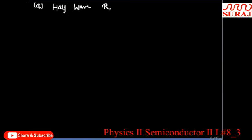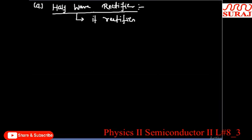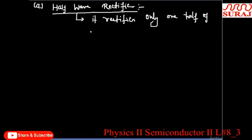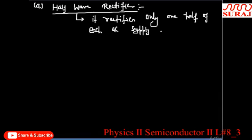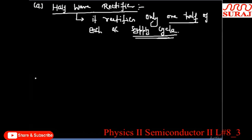Half wave rectifier — आपको idea तो है कि यह AC को DC में convert करता है। Half wave rectifier rectifies only one half of each AC supply cycle। जो पूरा cycle है AC का, इसके आधे part को — one half — इसको rectify कर देता है, मतलब pass कर देता है, बाकी को block कर देता है।